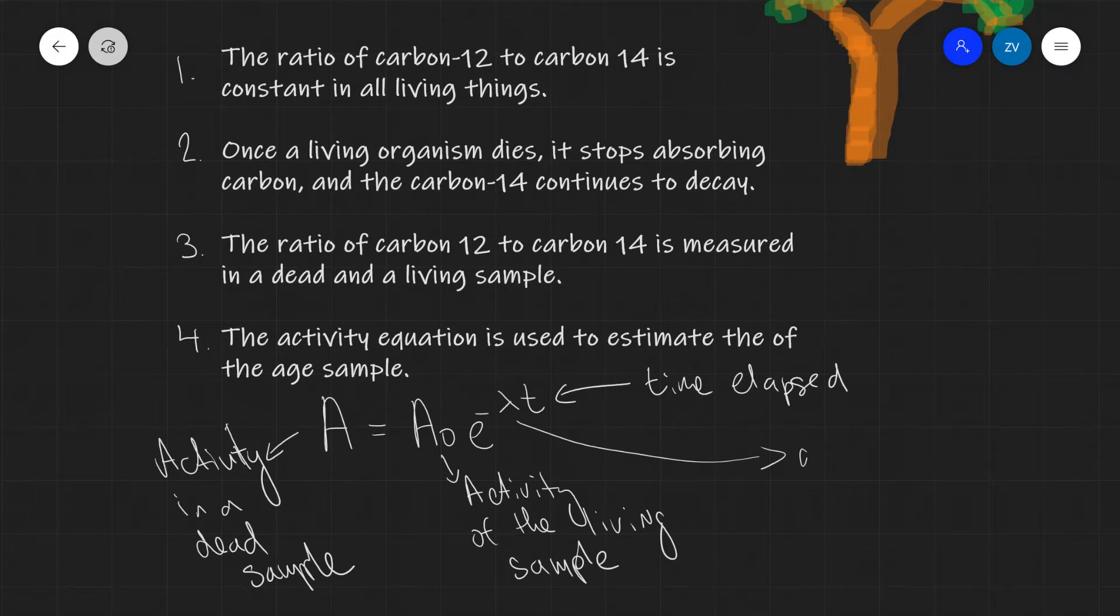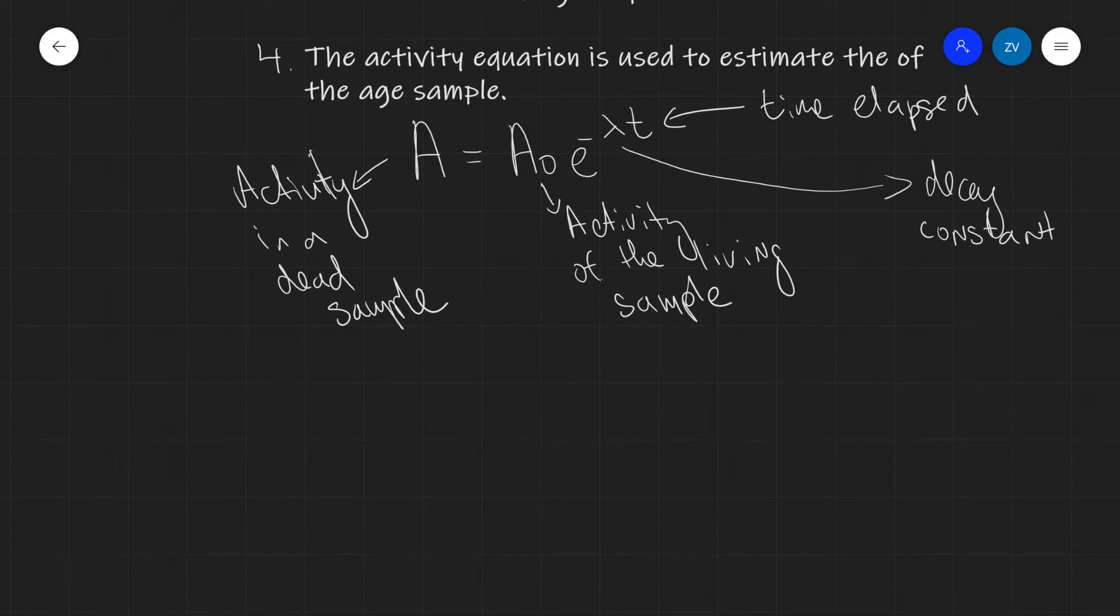Lambda is the decay constant. Let's use our knowledge of radioactivity to determine the decay constant for carbon-14. The half-life for carbon-14 is actually about 5,700 years. The half-life and the decay constant are linked by the equation: λ times t₁/₂ is equal to ln of 2. This means that our decay constant λ will be equal to ln of 2 divided by the half-life.